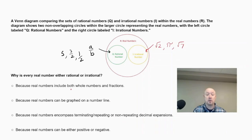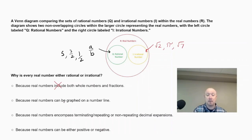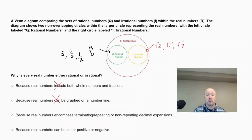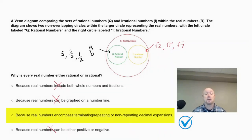Real numbers include both whole numbers and fractions — but that forgets irrational numbers, so that choice is eliminated. Real numbers can be graphed on a number line — but irrationals are difficult to represent precisely because their decimals never stop, so that choice is eliminated. Real numbers can be either positive or negative — but zero is also a real number and is neither, so that choice is eliminated. The correct answer is: because real numbers encompass terminating, repeating, or non-repeating decimal expansions.